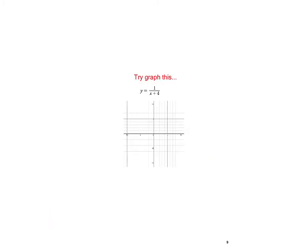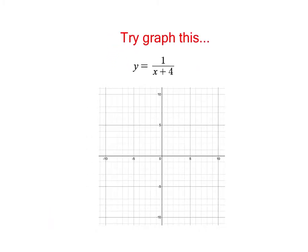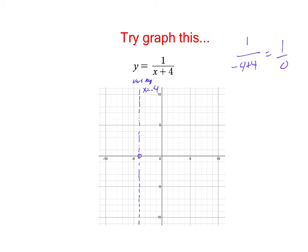Looking at the graph of 1 over (x plus 4), the big problem is going to be when x is negative 4. When x is negative 4, that would be 1 over (negative 4 plus 4), which is 1 over 0. So any time our x is negative 4, we'd have 1 over 0 — that would be a problem. That means this right here is an asymptote: x can't be negative 4. So our graph is never going to cross this dashed blue line. This is a vertical asymptote at x equals negative 4.